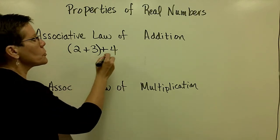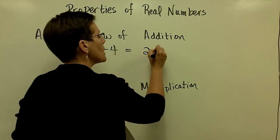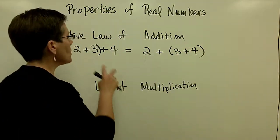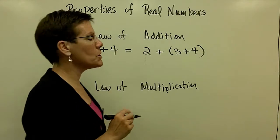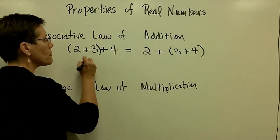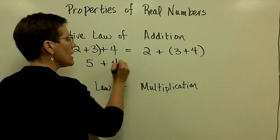I could change the grouping orientation. I could group the 3 and the 4, and I would get the same results. Order of operations here says that I should add the 2 and the 3 first and get a 5, then add that 4.